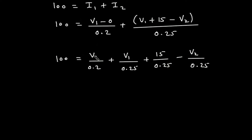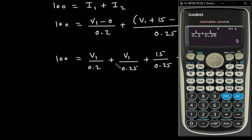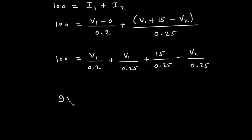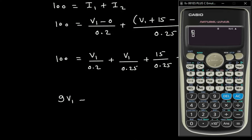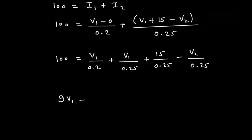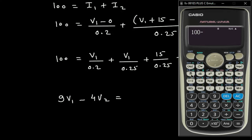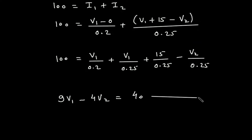Now simplifying: 1 by 0.2 plus 1 by 0.25 gives 9, so we have 9V1. Then 1 by 0.25 gives 4, so minus 4V2. Taking the constant 15 by 0.25, which equals 60, to the right side: 100 minus 60 equals 40. So Equation 1 is: 9V1 minus 4V2 equals 40.